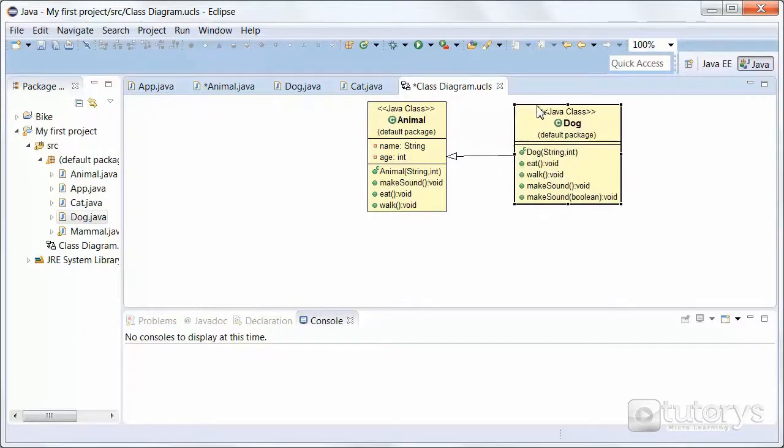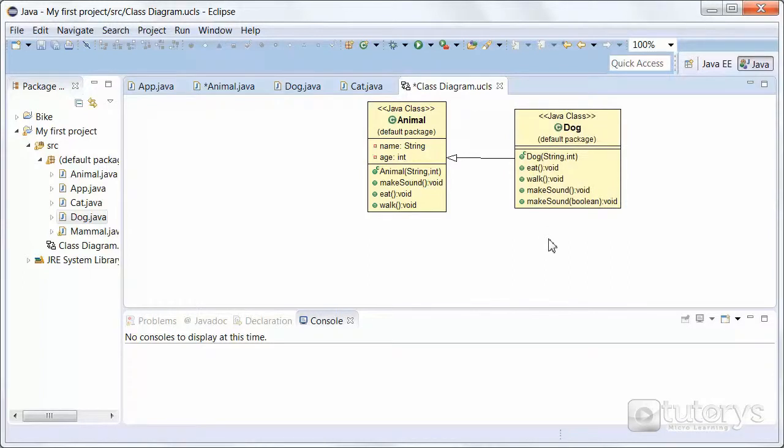Basically, Eclipse will generate all of the relationships depending on your code. That's how you model relationships or interactions in Java.